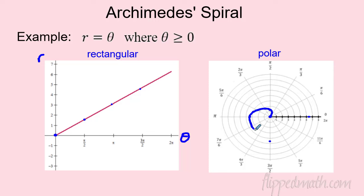The spiral keeps growing outward and could continue forever. The key idea throughout is to use both the rectangular and polar representations together — graphing on the rectangular axis to analyze the function, then matching or describing the polar graph. Good luck on the practice and the mastery check — peace out.